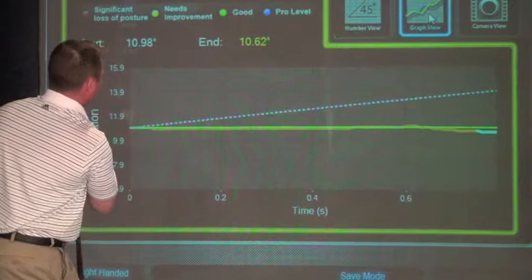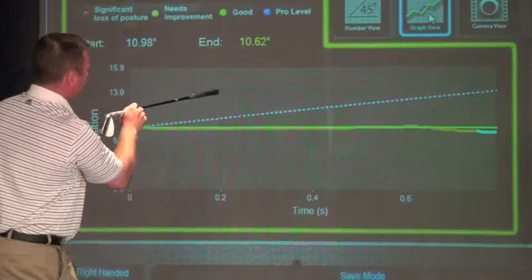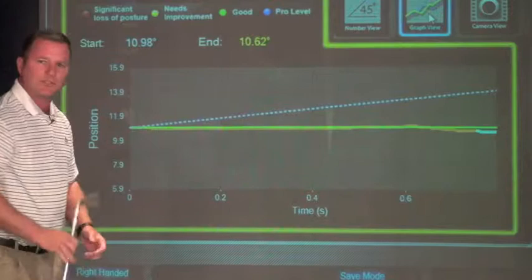So you'll see here on the graph, one of the things that occurred on that swing is I stood up slightly, and that's why the orange line dropped below the green line up on this graph.